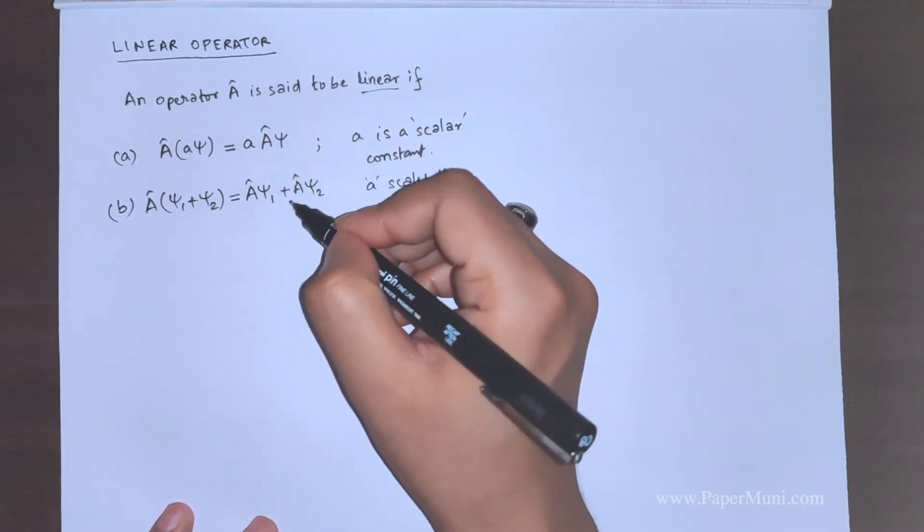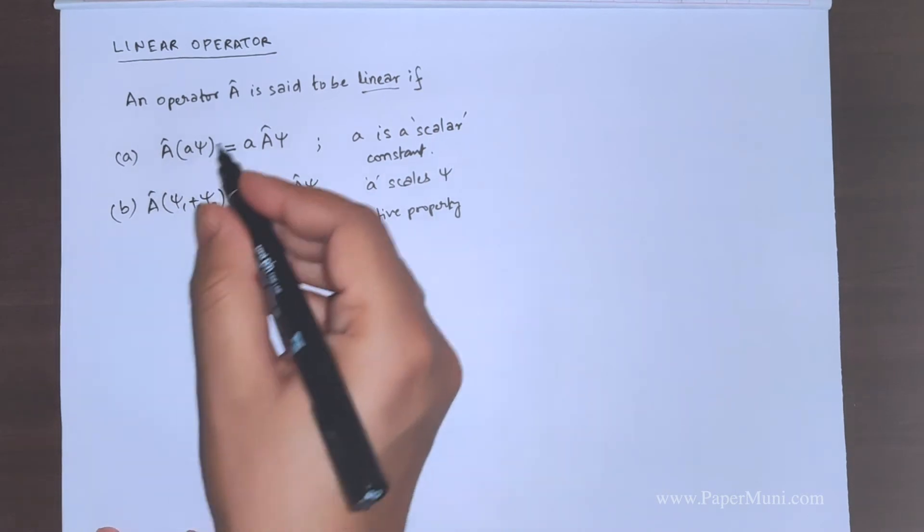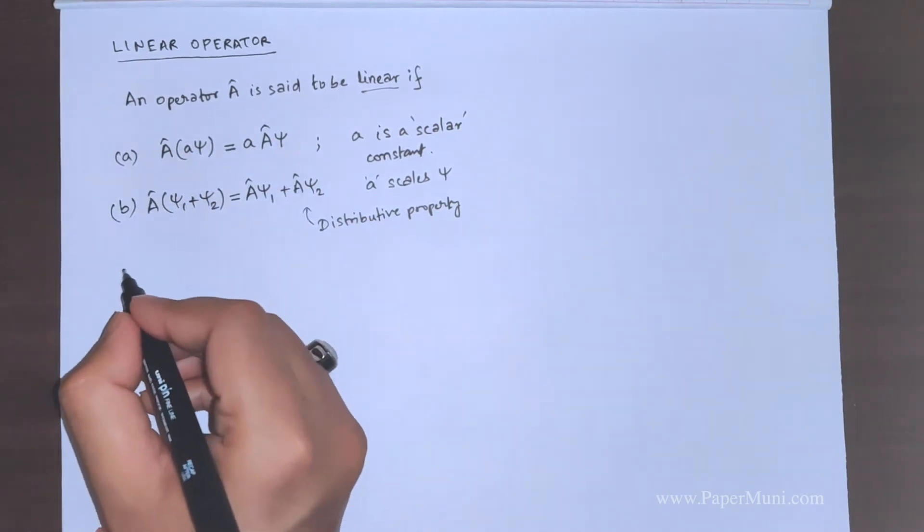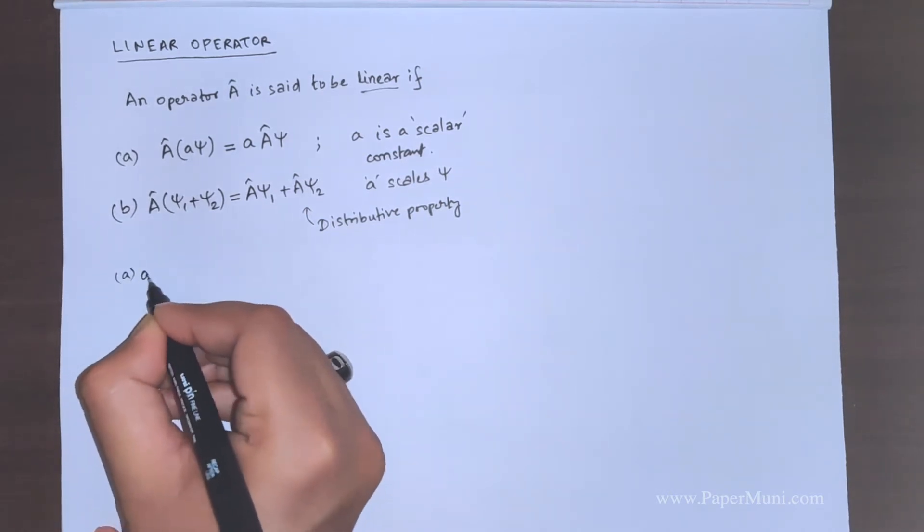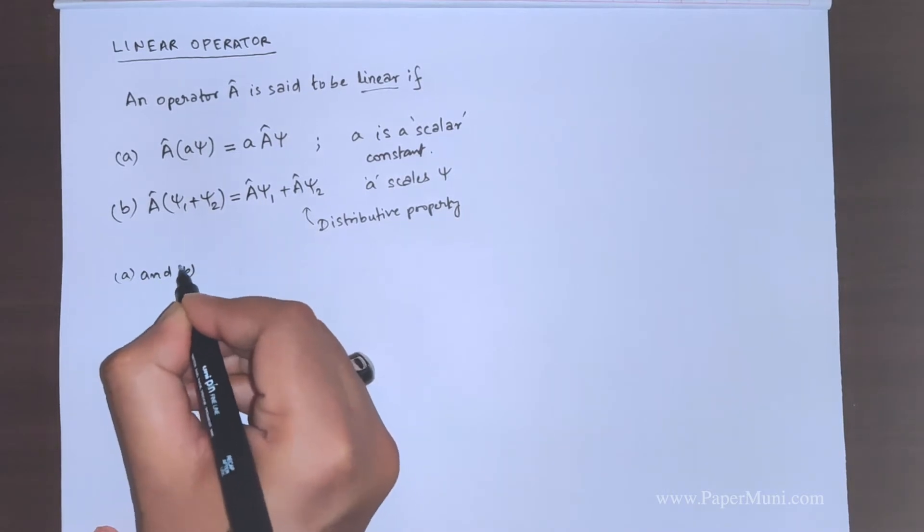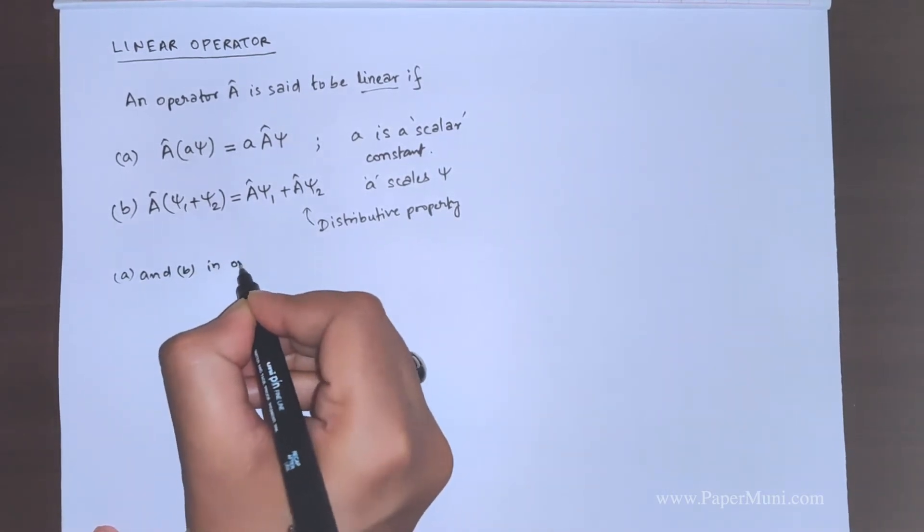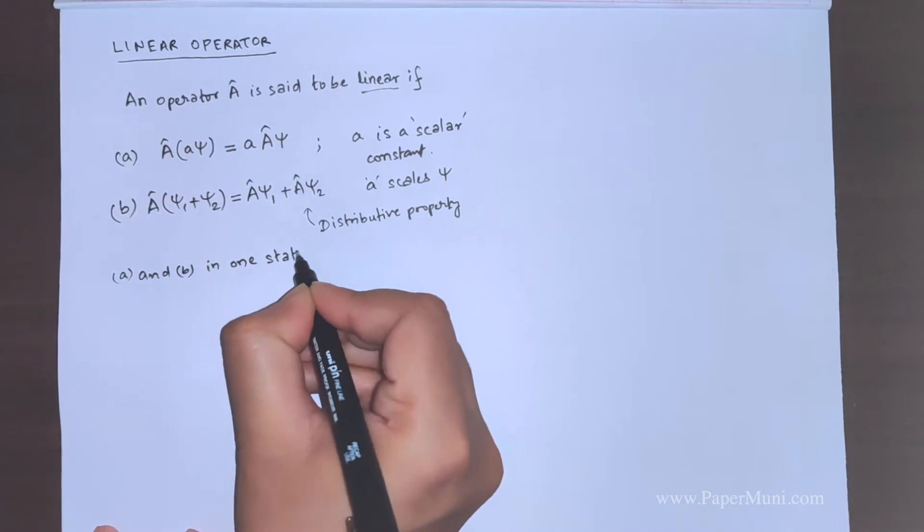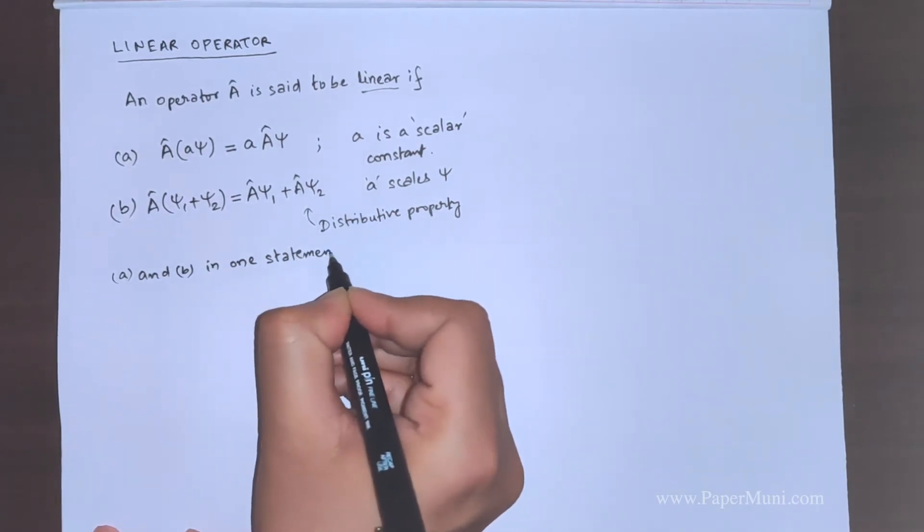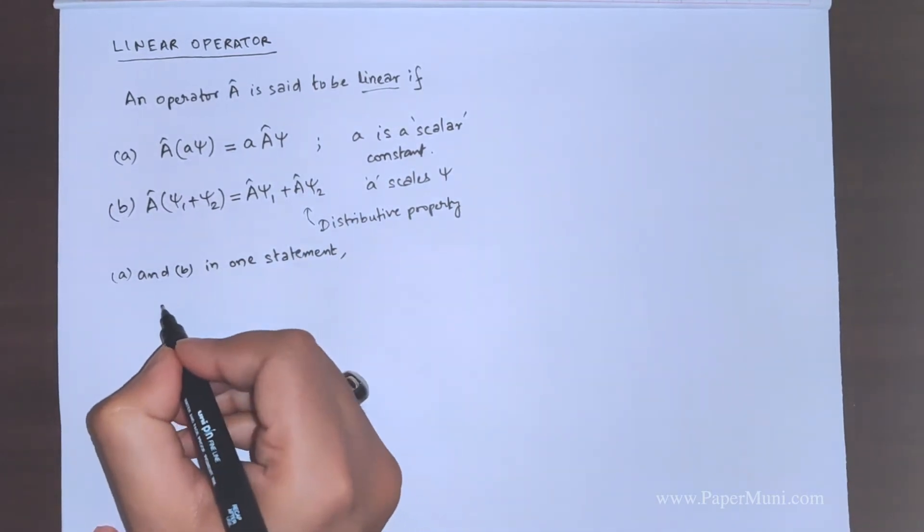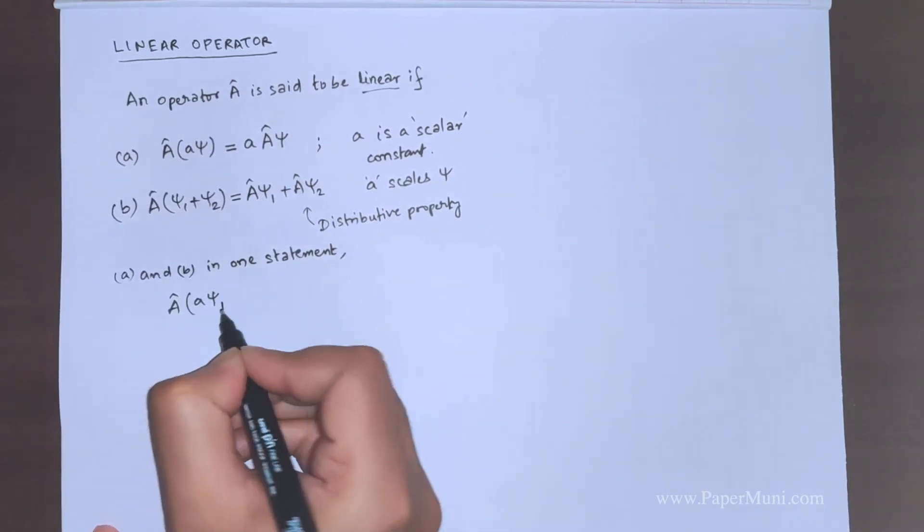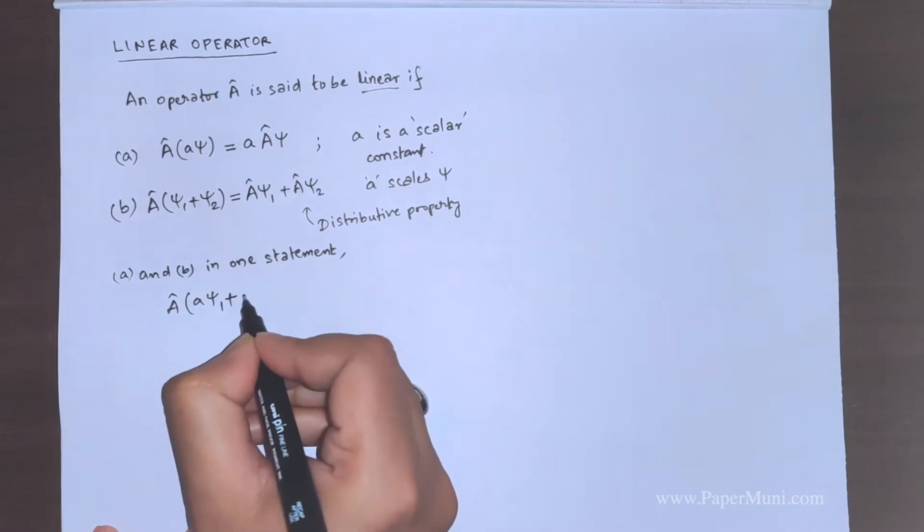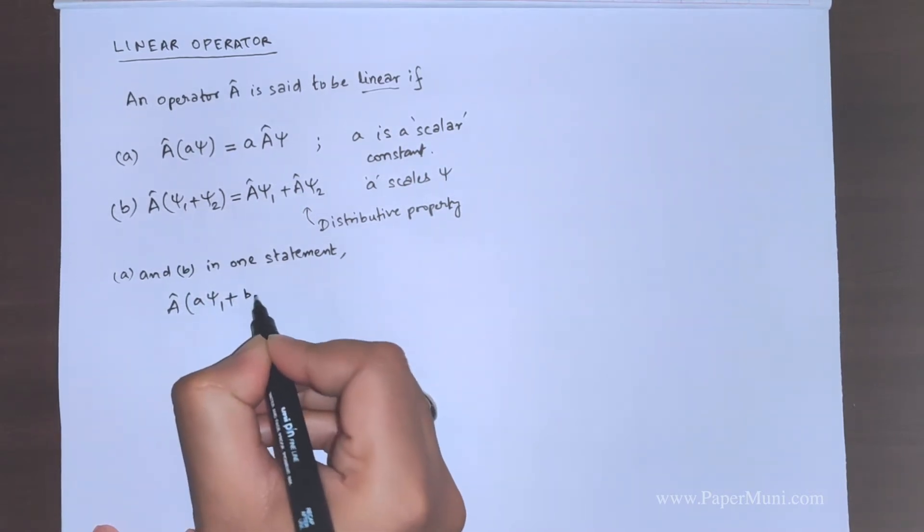If these two conditions are satisfied by an operator A, then this operator is said to be linear. Now, we can combine these two statements into one. Instead of doing separately, we can write A and B in one statement.